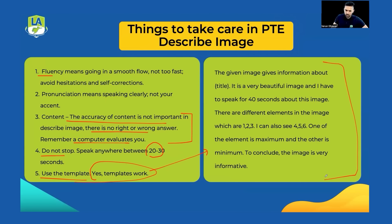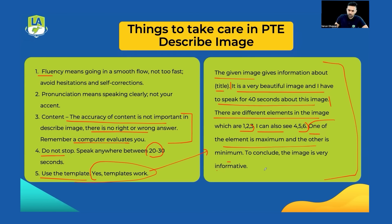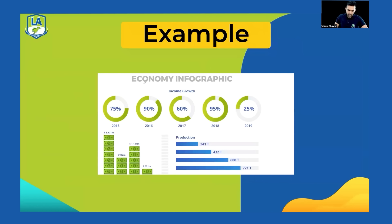Here's the template: start with 'The given image gives information about [title]. It is a very beautiful image and I have to speak for 40 seconds about this image.' This sentence helps you maintain your flow and fluency. Then say 'There are different elements in the image which are [three keywords]. I can also see [three more keywords].' You can also add one sentence about maximum and minimum elements. To conclude: 'The image is informative.' Take a screenshot — this is 100% working.